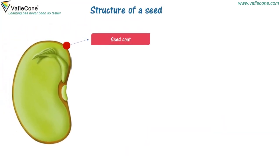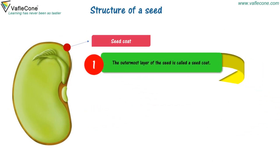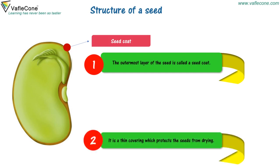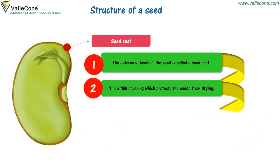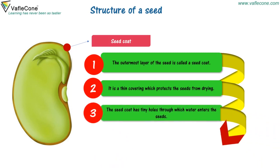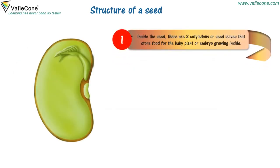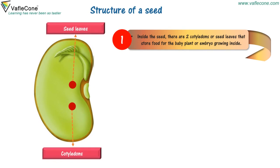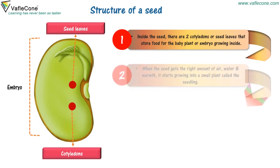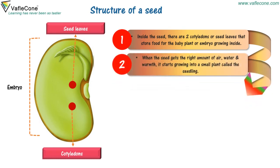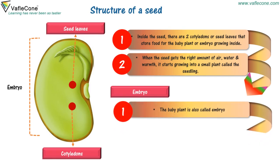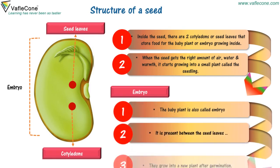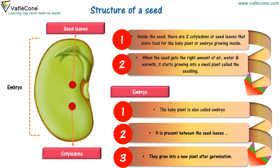Structure of a seed. The outermost layer of the seed is called a seed coat. It is a thin covering which protects the seed from drying. The seed coat has tiny holes through which water enters the seeds. Inside the seed, there are two cotyledons or seed leaves that store food for the baby plant or embryo growing inside. When the seed gets the right amount of air, water, and warmth, it starts growing into a small plant called the seedling. The baby plant, also called the embryo, is present between the seed leaves and grows into a new plant after germination.